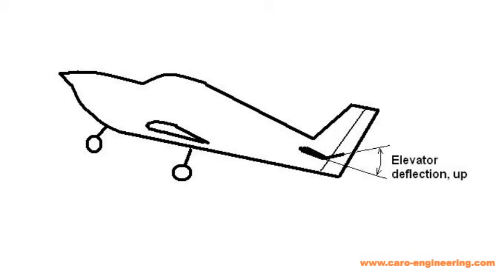The down elevator deflection must be large enough to pitch down during all maneuvers, including recovery from a stall or spin. Typical elevator deflections are 20 to 25 degrees up and 15 to 20 degrees down.